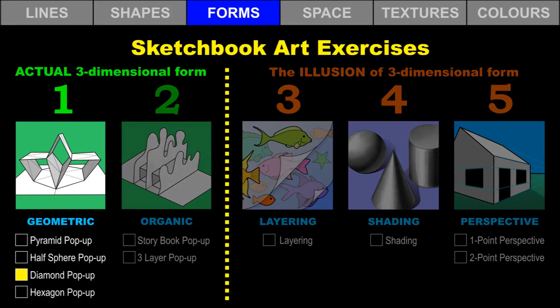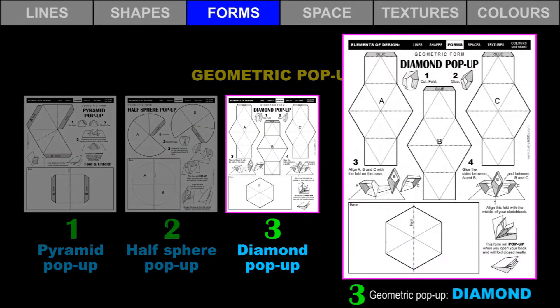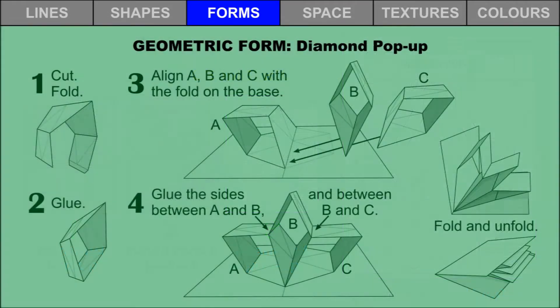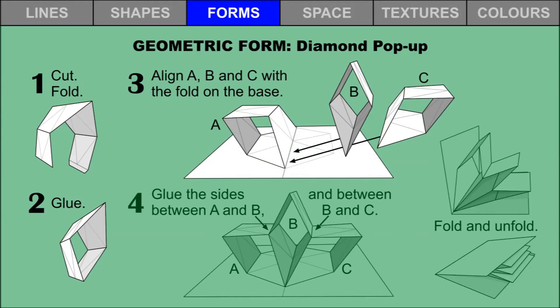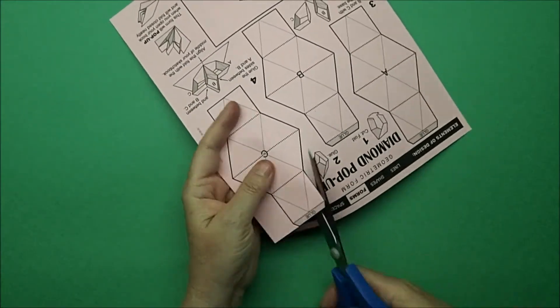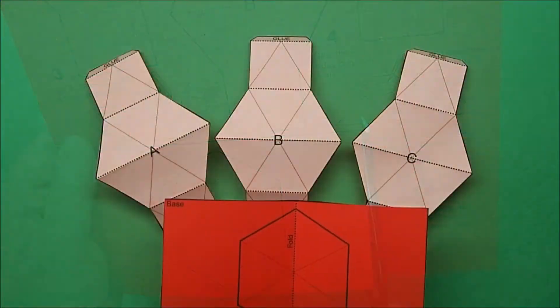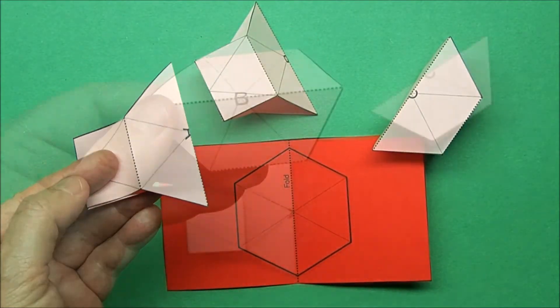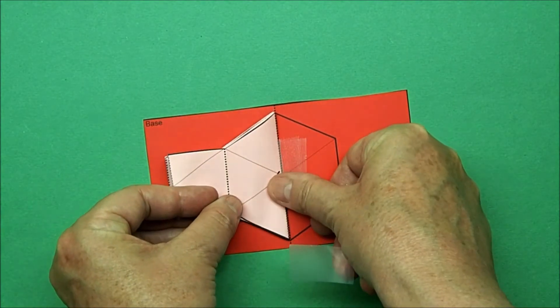Let's create the diamond pop-up. Printable worksheets are provided. Cut out the three diamond templates and fold along all of the dashed lines. Make three diamond forms by gluing the flaps. Cut out the base and fold along the central dashed line. Align the fold of diamond A with the central fold on the base and glue it in place. Align the fold of diamond B with the central fold on the base. Align the fold of diamond C with the central fold on the base. This diamond form will fold flat. Take your time to cut and fold accurately — don't use too much glue. You could use clear tape instead. This three-dimensional form is made with different two-dimensional shapes.